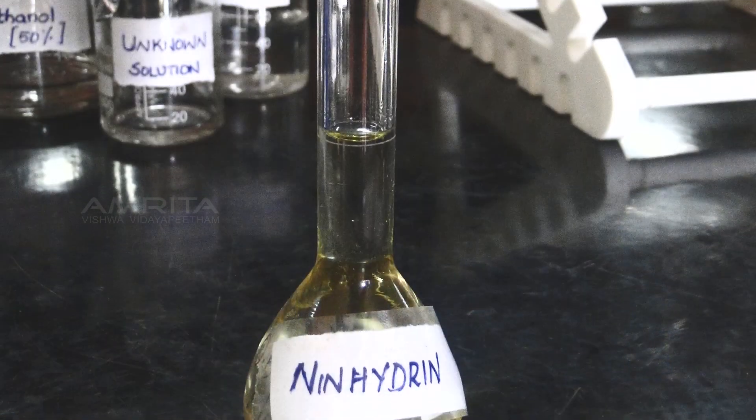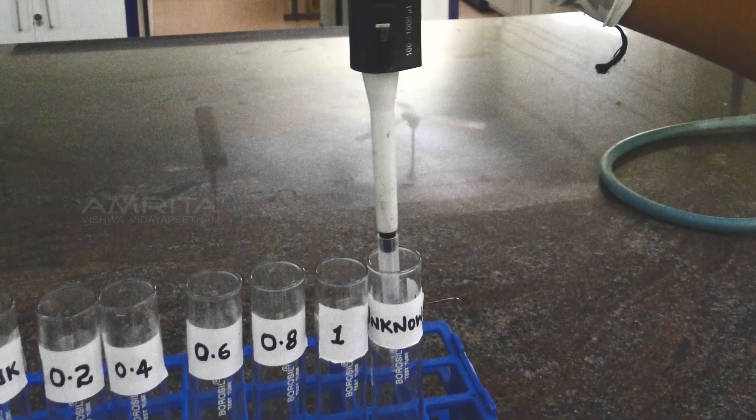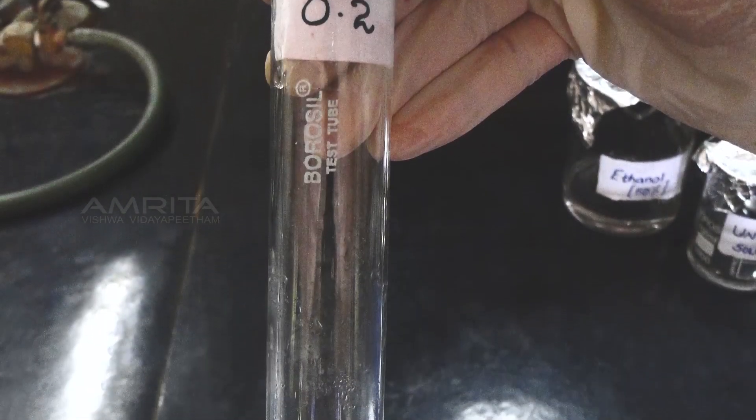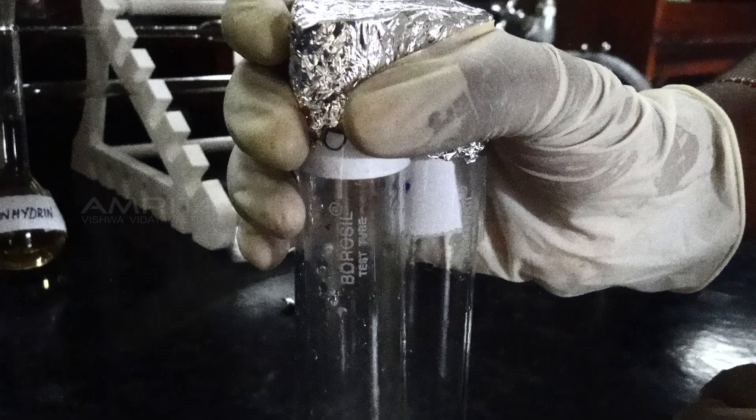Now add 1 ml of Neenhydrin reagent to all test tubes including blank and unknown. Mix the contents of the test tubes by vortexing or shaking the tubes. Cover the mouth of the test tubes with aluminum foil.